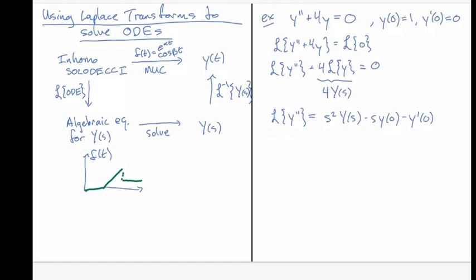So in this one here we have y(0) equals 1 and y prime(0) equals 0. So that gives us s squared Y(s) minus s, and then y prime is 0 at 0. So now I can write down the algebraic equation for Y(s) which is s squared times Y(s) minus s plus 4 times Y(s), and that's equal to 0.